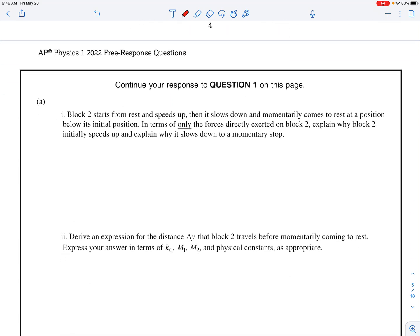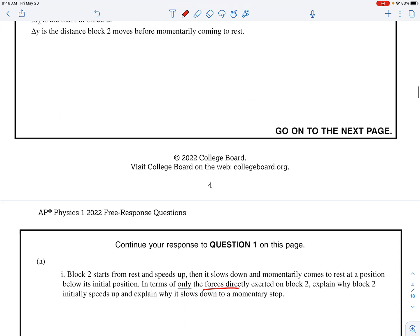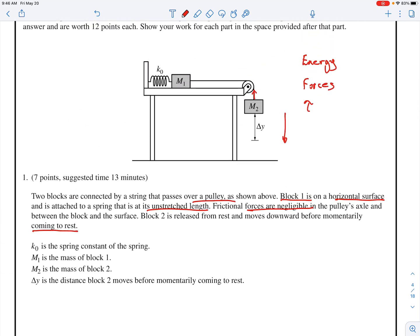Now, what's the question? Block two starts from rest and speeds up. Then it slows down and momentarily comes to rest at a position below its initial position. In terms of only forces directly exerted on block two, explain why block two initially speeds up and explain why it slows down and momentarily stops. Okay, that's easy. If you're looking at the forces here, then if you're drawing a force diagram, you're going to have tension here, and you have Mg, M1g, M2g. When you release this thing, M2 is greater than T here. So because of that, that thing is going to accelerate and it's going to speed up.